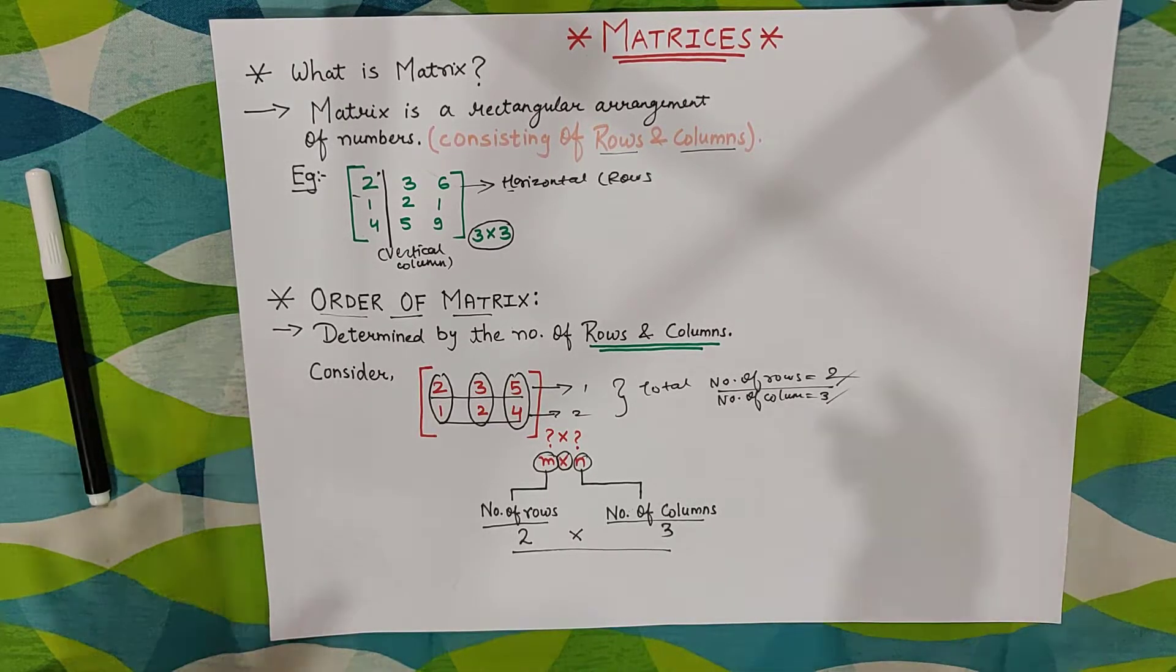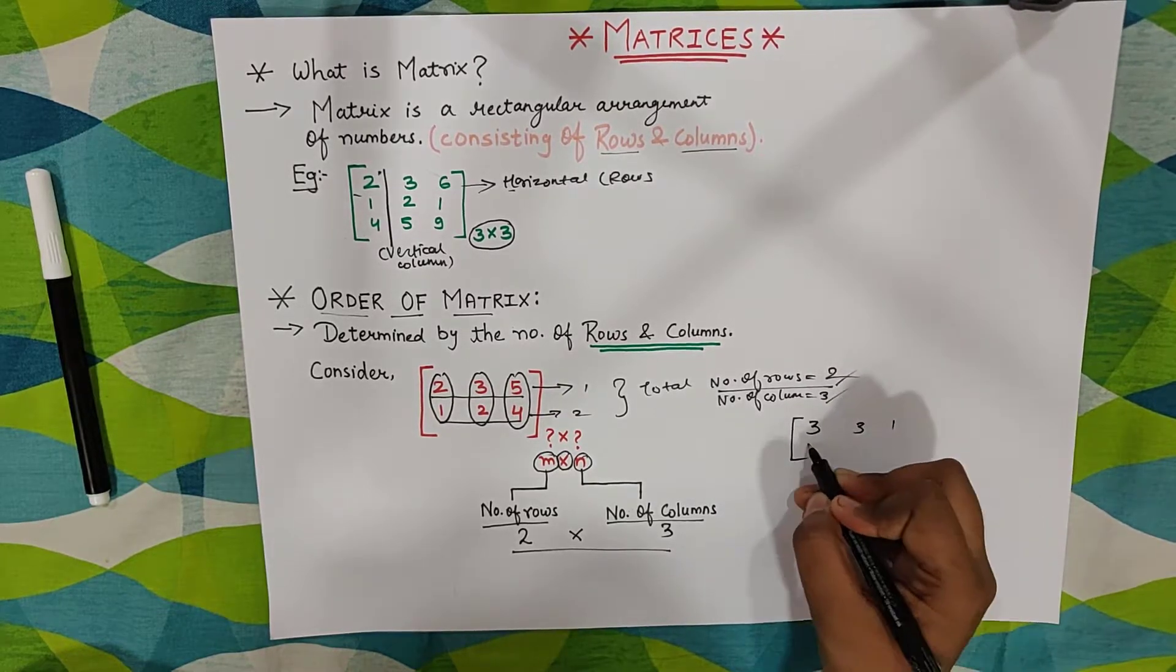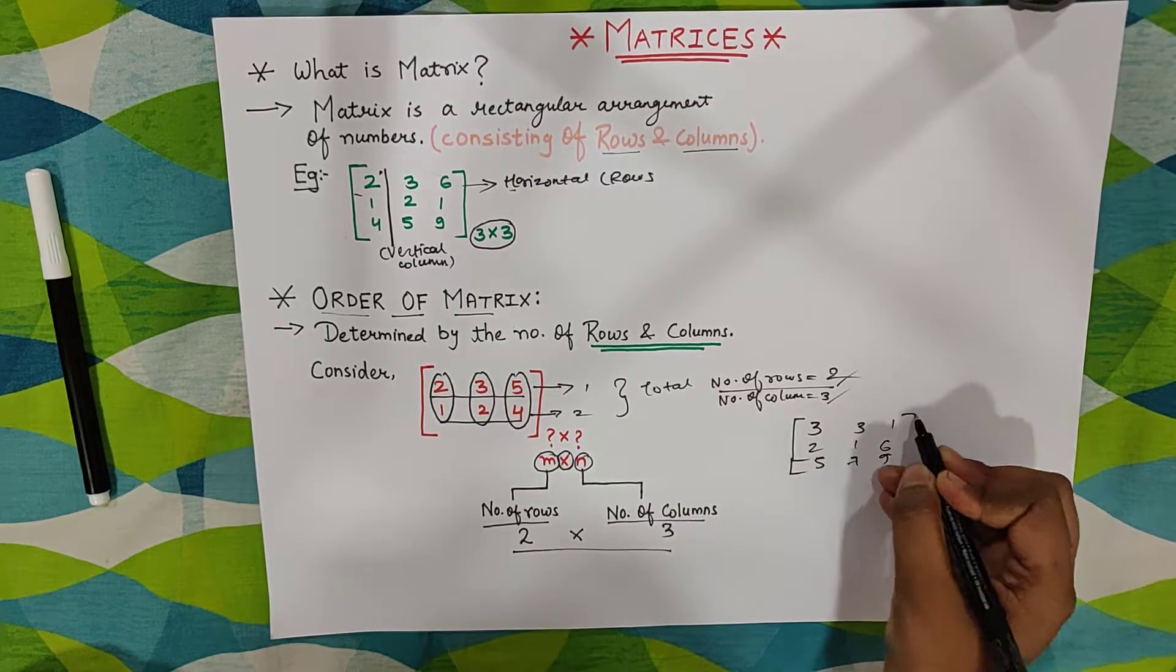So now if you have understood this thing guys, you can identify order of any matrix. Let me give you another example. Consider we have three, three, one, two, one, six, and five, seven, nine. Suppose we have a matrix like this.